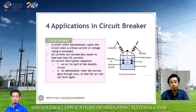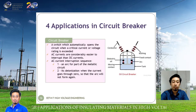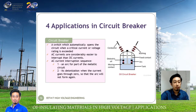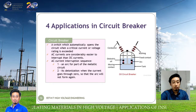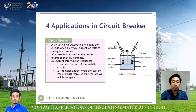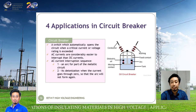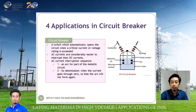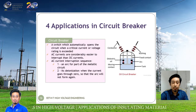This is the application for the circuit breaker. Same as the rotating machine, they have two types. A circuit breaker is a switch which automatically opens the circuit when the critical current or voltage rating is exceeded. This figure shows the circuit breaker for high voltage. DC current is considerably easier to interrupt than AC current.